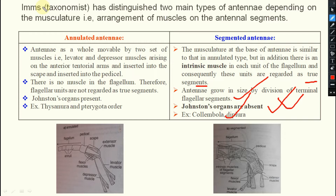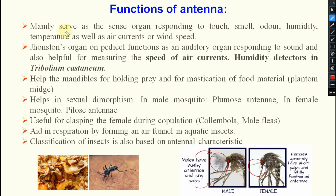Which one is the common one? Annulated antenna is the common one in insects. Now coming to your functions of antenna — antennae are mainly serving as sense organs responding to touch (tactile), smell, that is olfactory receptor, then humidity, temperature, as well as air currents or wind speed.